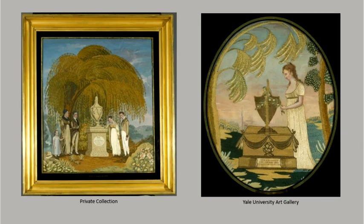Tapestries are woven primarily of linen and wool, but silk is often used to render intricate details and skies in natural scenes. The method of tapestry weaving leaves splits between the vertical warp yarns where colors change.